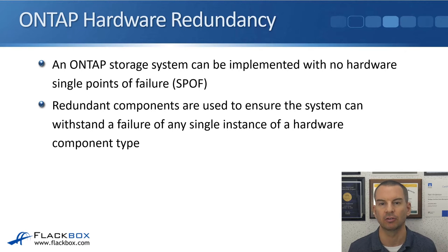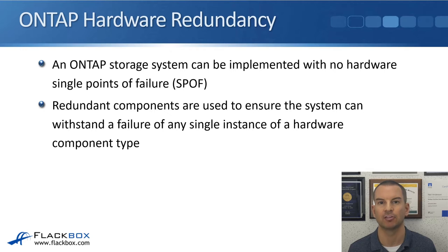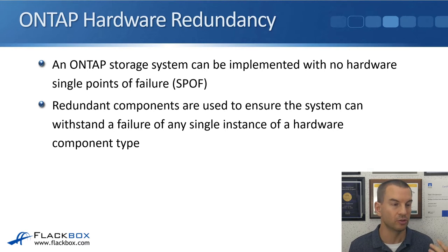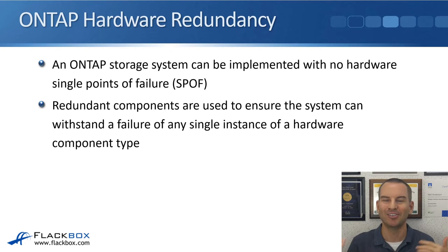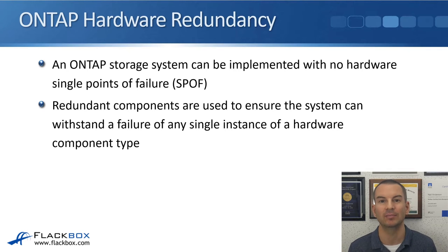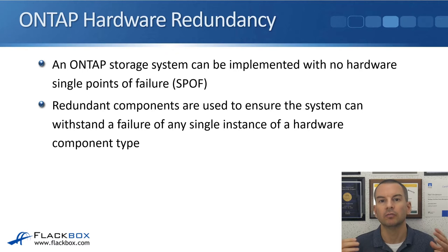If a single disk, single disk shelf, or single controller failed, the cluster can carry on operating. If you have a failure of two components of the same type, it's not guaranteed to protect against that — but the chance of two hardware components of the same type coincidentally failing at the same time is very unlikely. It's very rare for any hardware component to fail, so for two of them to fail at the same time is highly unlikely. And if that highly unlikely event did occur, there are still other features such as Metro Cluster and SyncMirror in conjunction with the hardware redundancy that do protect against that.